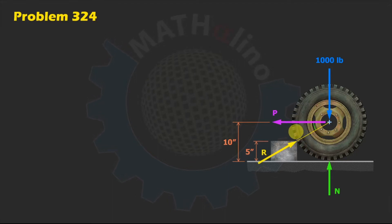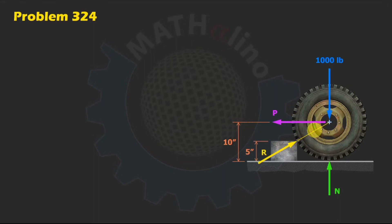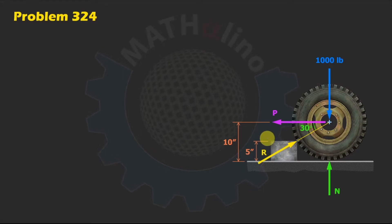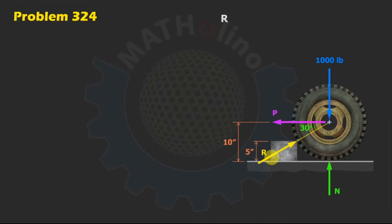The vertical distance from the floor to the center of the wheel is 10 minus 5 = 5 inches, and the radius is 10 inches. This 5 inches is opposite the angle and 10 inches is the hypotenuse of the right triangle, so this angle is arc sine of 5 over 10, which is arc sine of one half — that is 30 degrees.